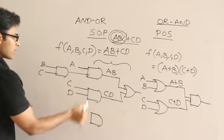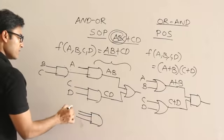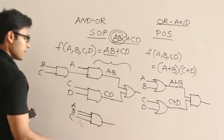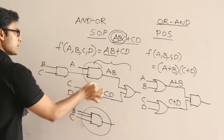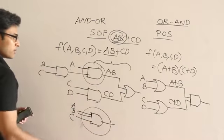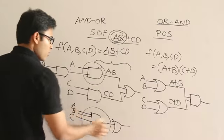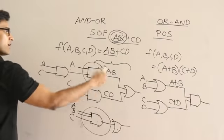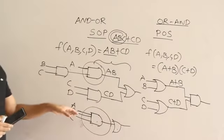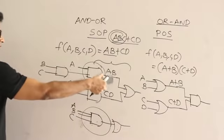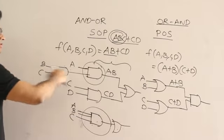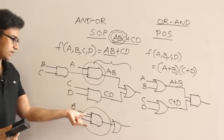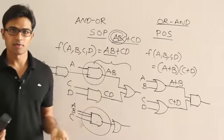If you want to implement in fewer levels, you need a higher fan-in, but that makes the gate more costly — a two-input AND gate is cheaper than three-input, which is cheaper than four-input. However, fewer levels means faster operation because the overall time depends on the number of levels the signal passes through. More fan-in means higher cost but faster speed.